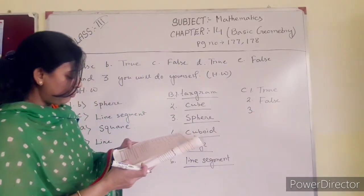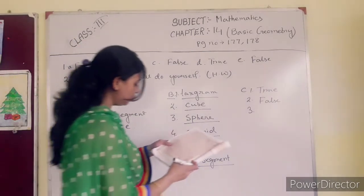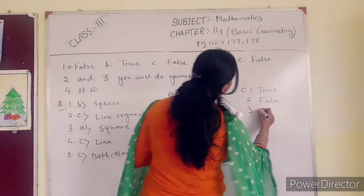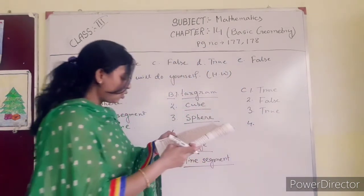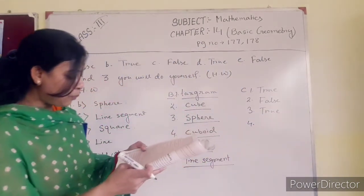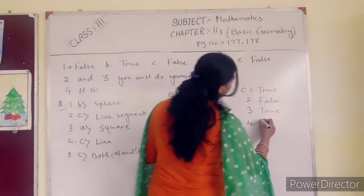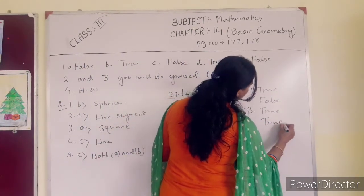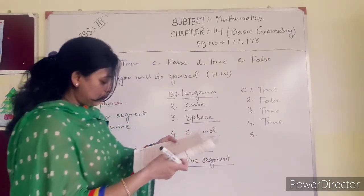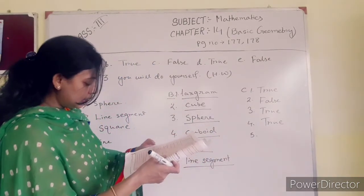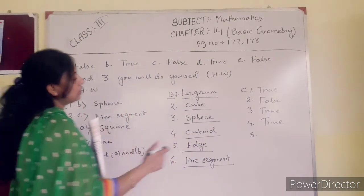Number 3: 'A face is the surface of a solid.' True. Number 4: 'A corner is the point where three faces meet.' Yes, of course — this one is true. Number 5: 'A point is an infinite position represented by a dot.' This one is false.